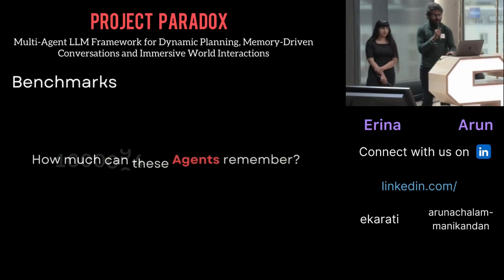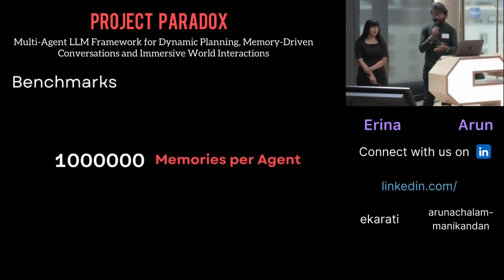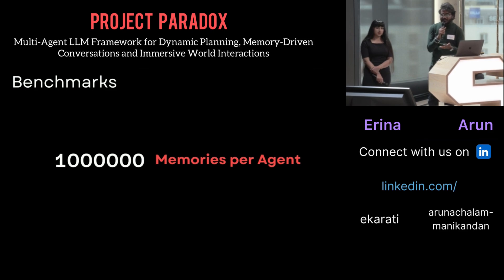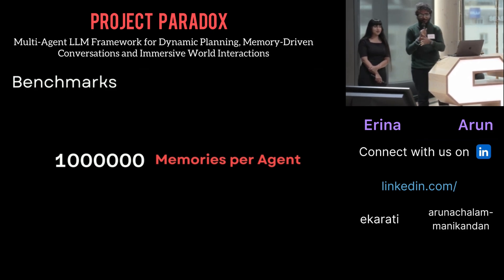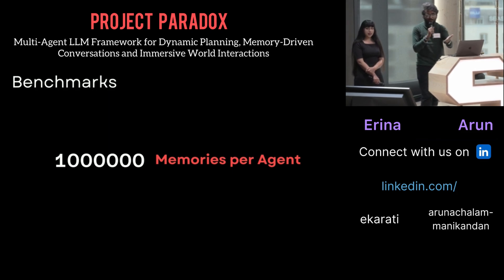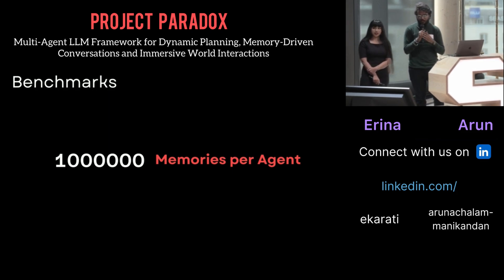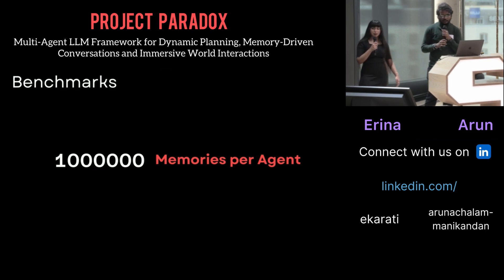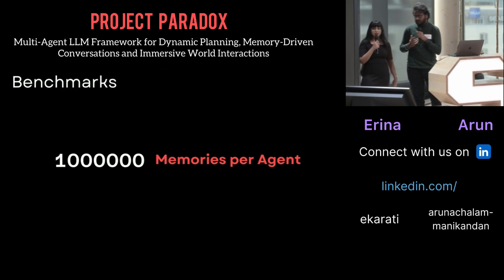Certain benchmarks show our agents can store up to one million memories. We want to stress test it with more and more interactions and see how we can apply it in fields like marketing or political scenarios — for example, having two people compete and seeing how the agents are influenced. Agentic AI is the current hot research trend, and we feel our framework has a lot of applications in the research domain, including marketing, social computing, and more.